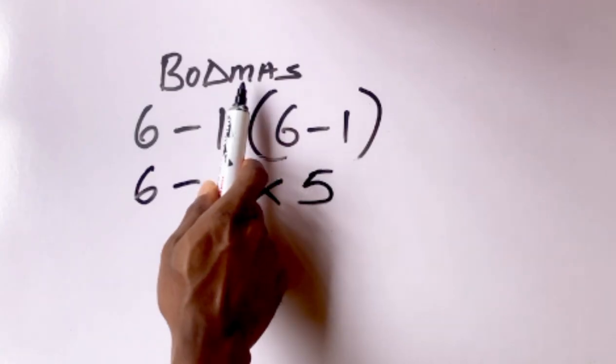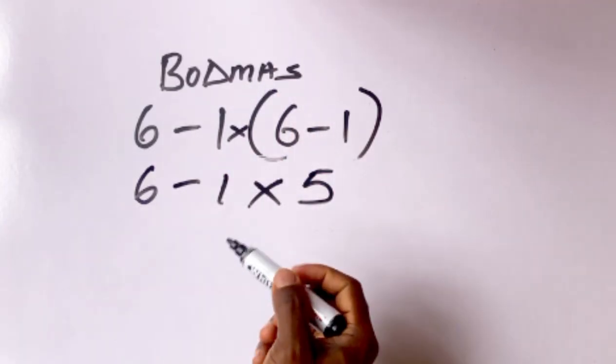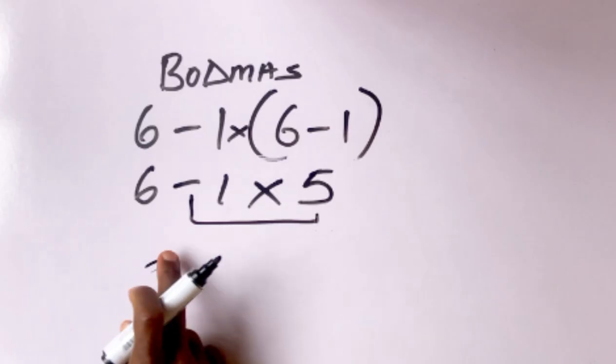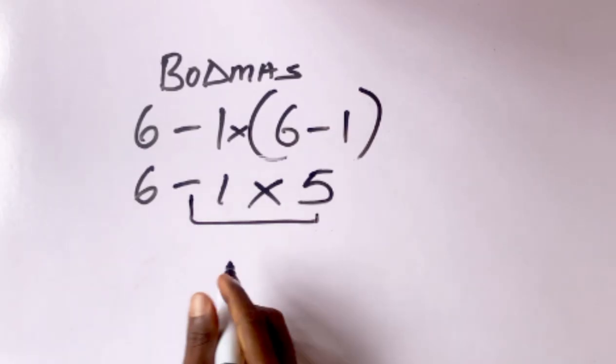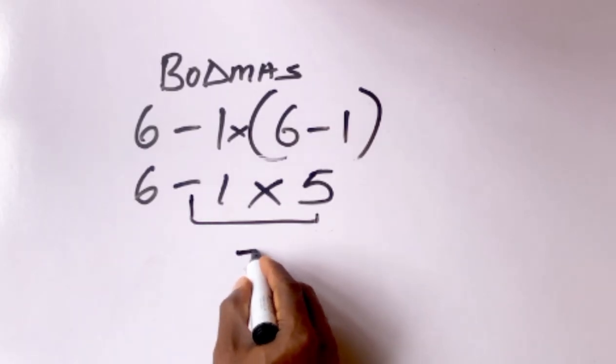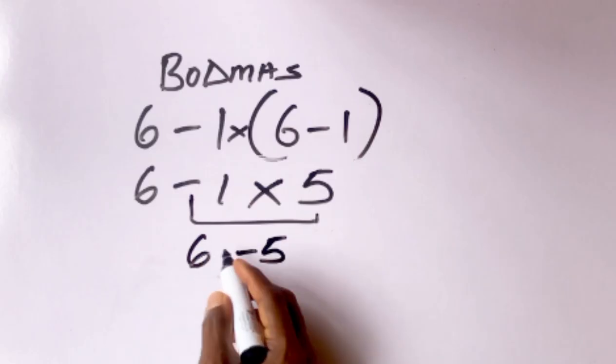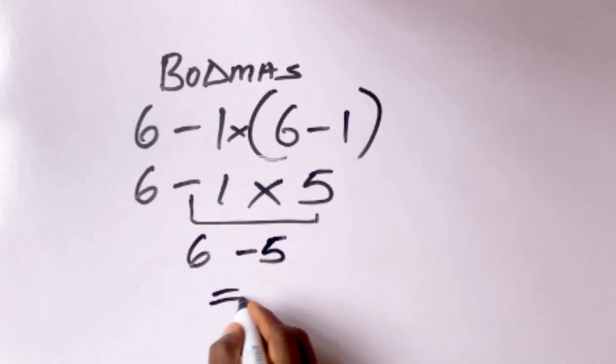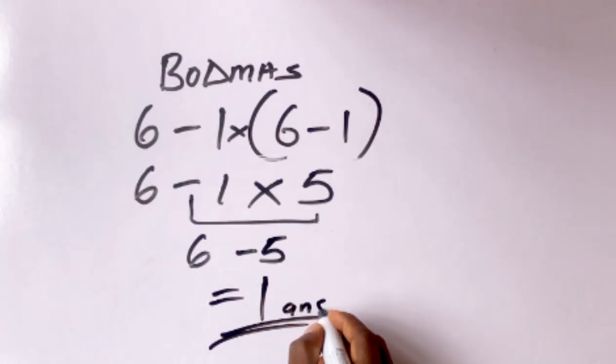Remember multiplication comes before subtraction. So minus 1 times 5 will give us what? Minus 5. Then 6 minus 5 is equal to 1. That is our final answer.